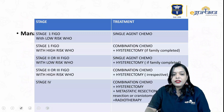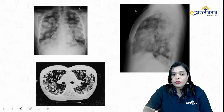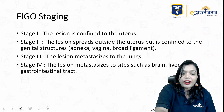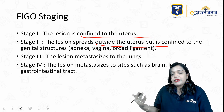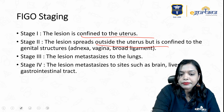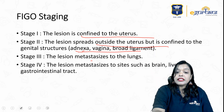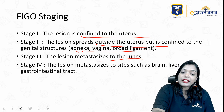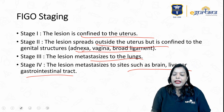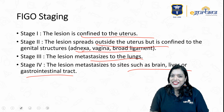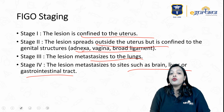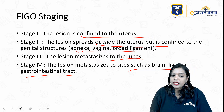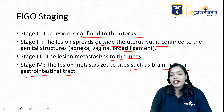Let us go a little further. You should know the staging. Stage 1 is the lesion confined to the uterus. Stage 2 is lesion spreading outside the uterus but still within the genital structures — adnexa, vagina, broad ligament. Stage 3 is lesion metastasizing to the lungs. Stage 4 is metastases to the brain, liver, and GI tract. Very easy staging actually among all the stagings you have learnt.